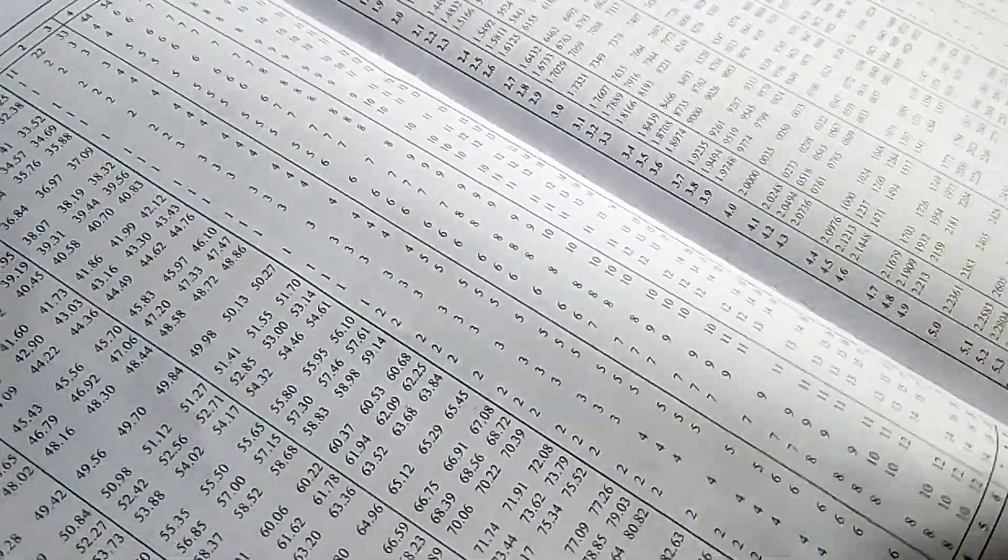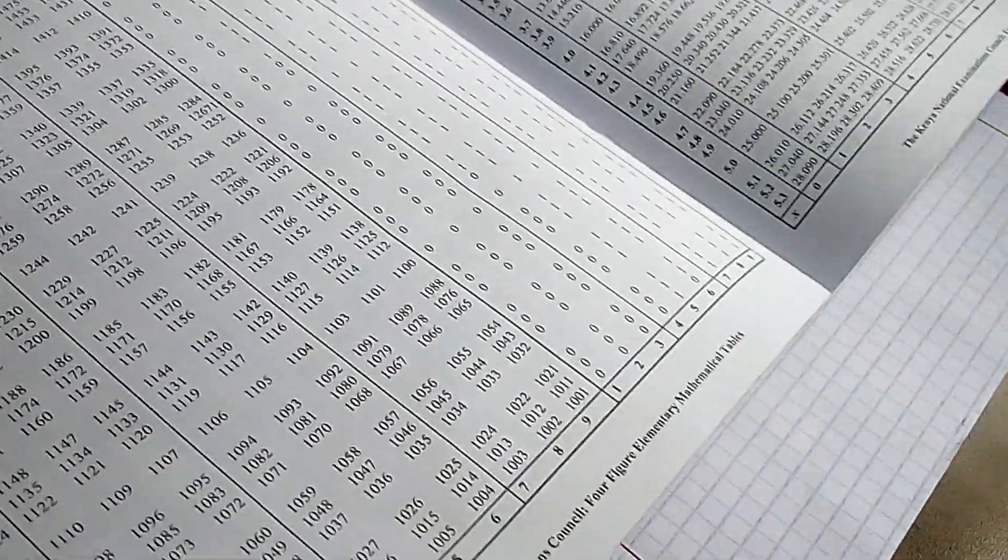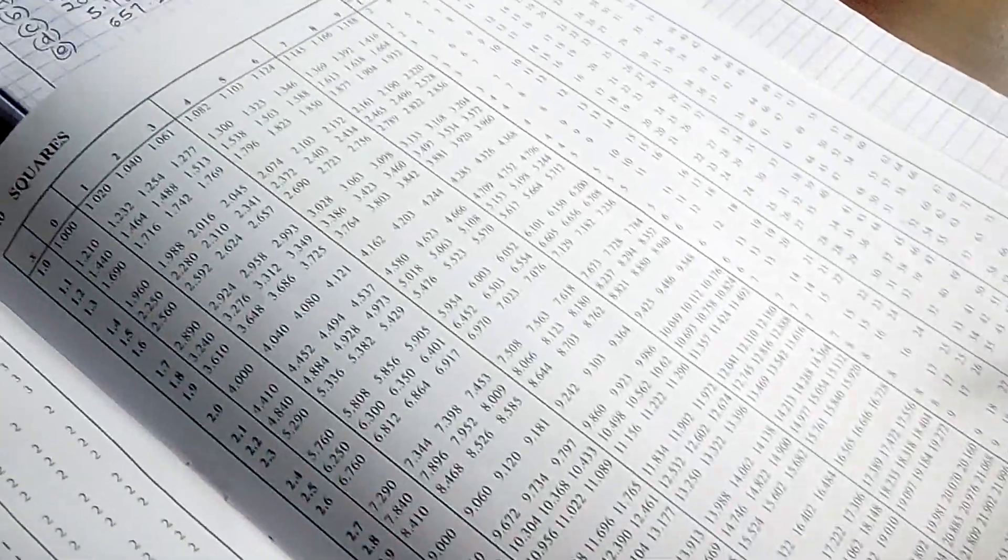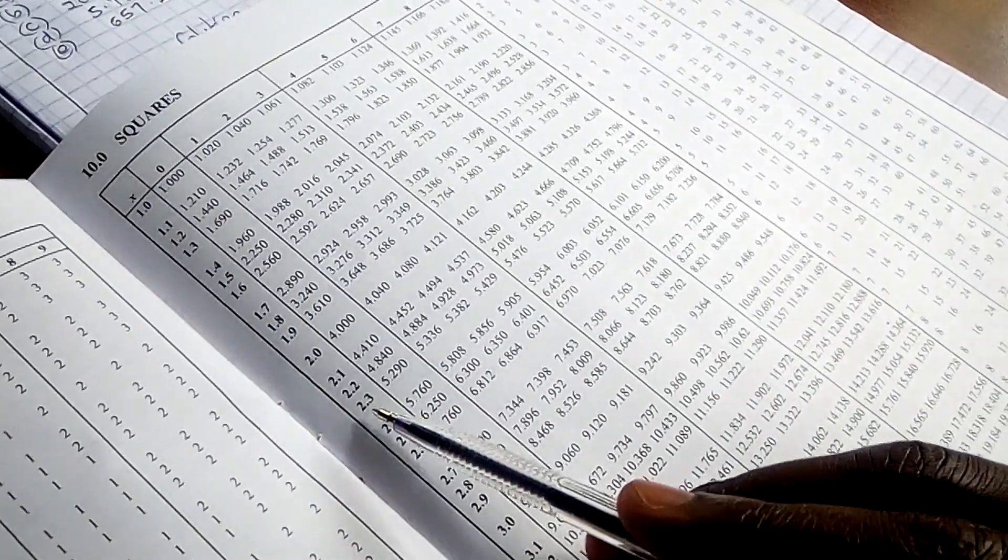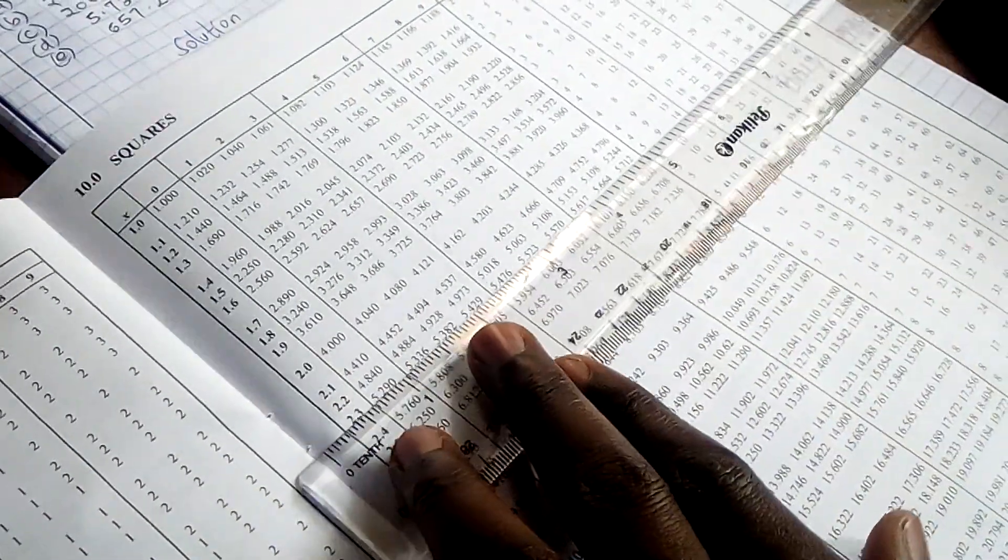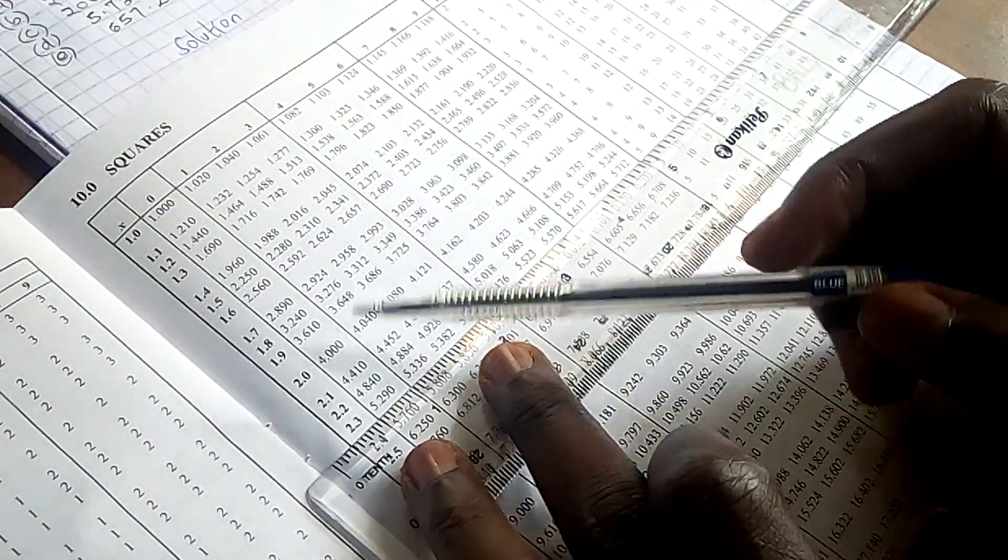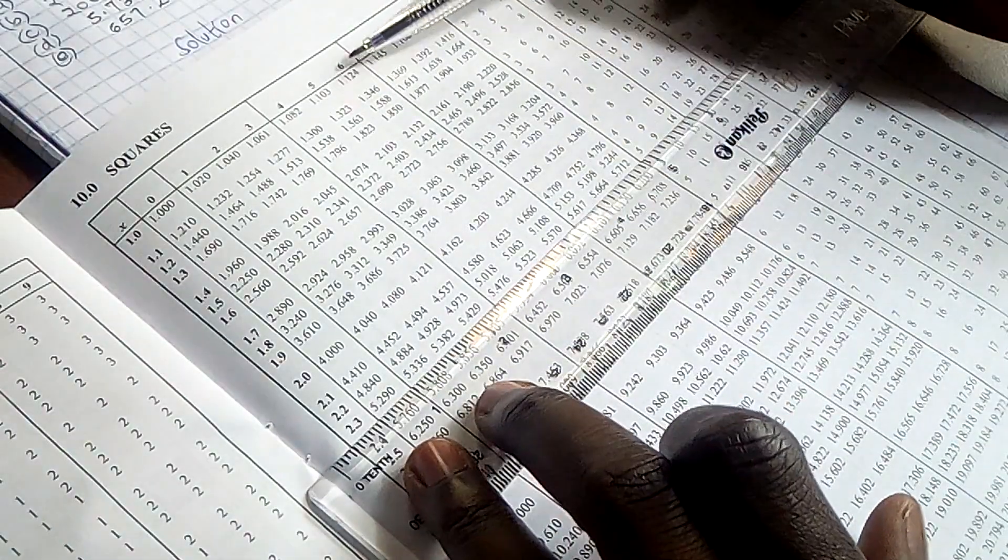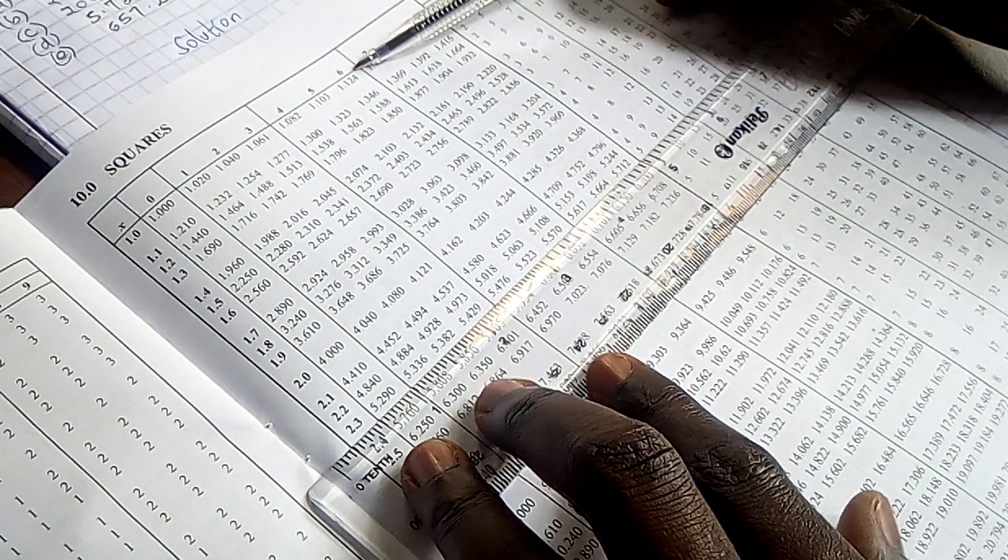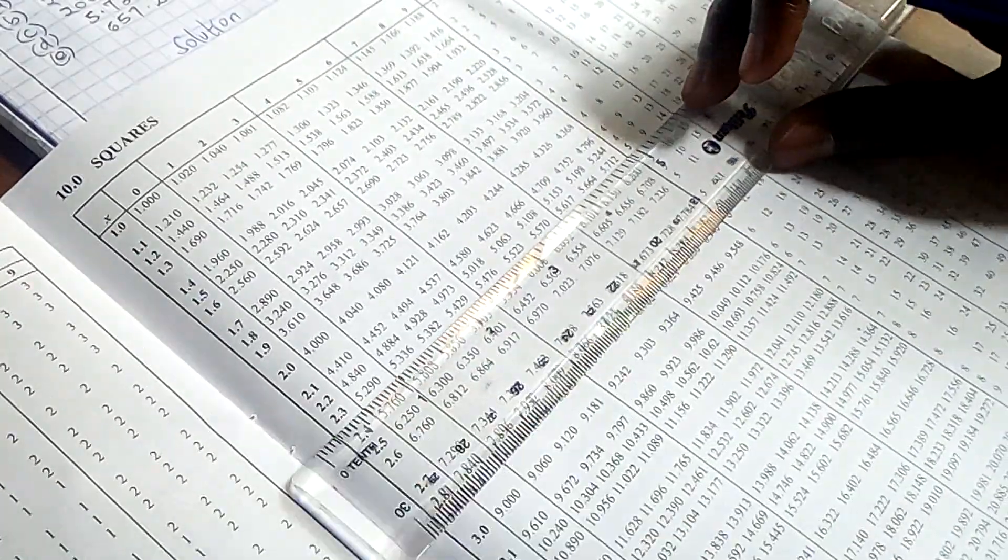So we get to the tables of squares and we check where we have 2.364. So we have 2.3, then we look at where it coincides with 6. So 2.364. At what value does it coincide? It coincides at this particular value.